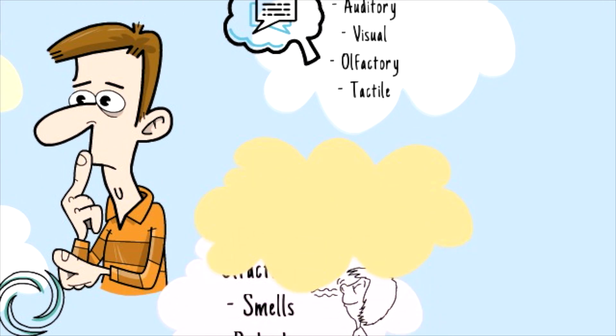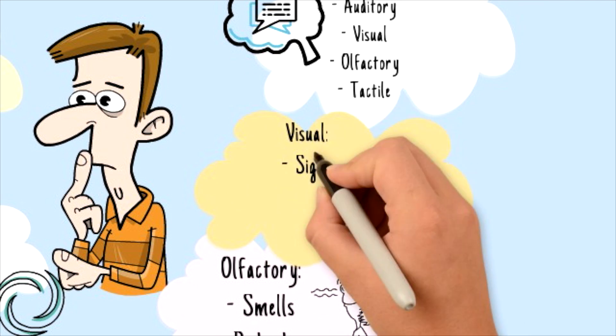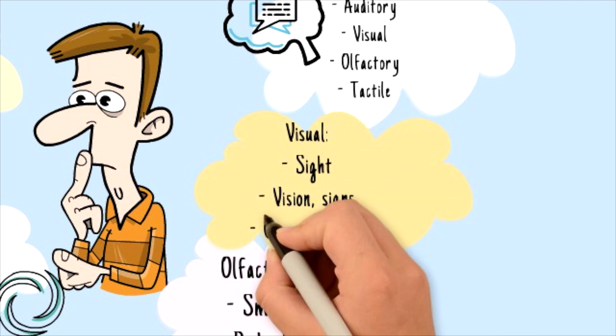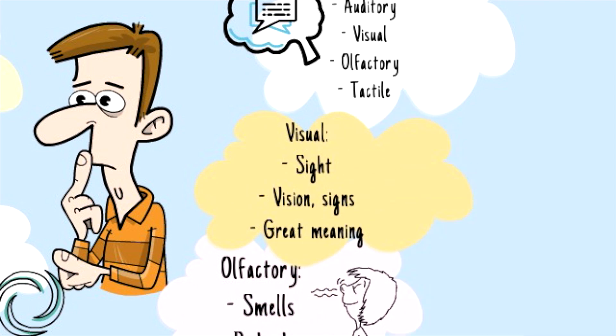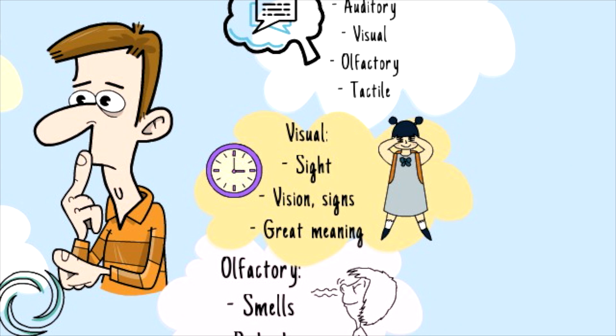The next type of hallucination is visual hallucination. This type of hallucination is related to the sight. What happens is that the person sees something that is not really there.